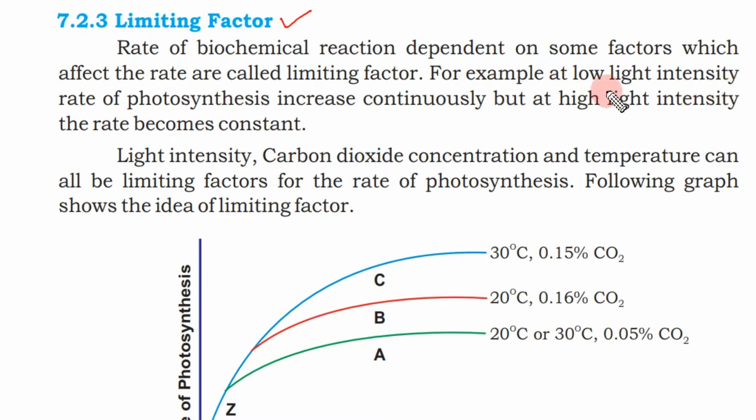For example, at low light intensity, the rate of photosynthesis increases continuously, but at high light intensity, the rate becomes constant. For example, if the light is low...